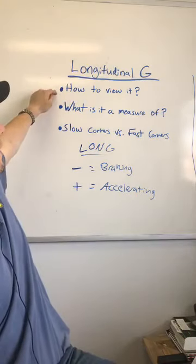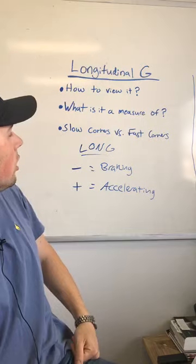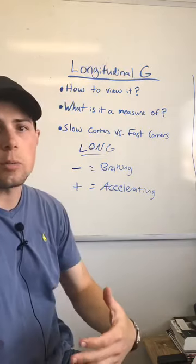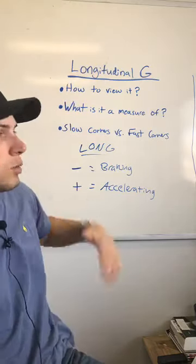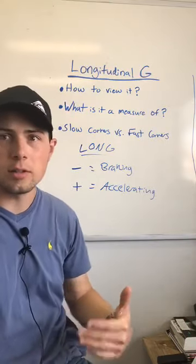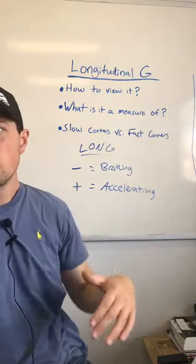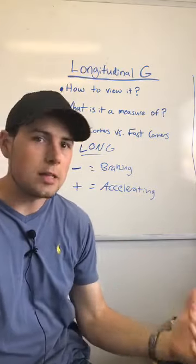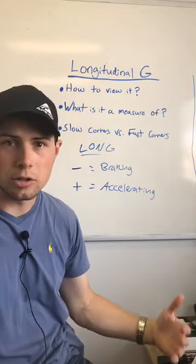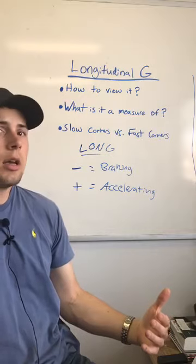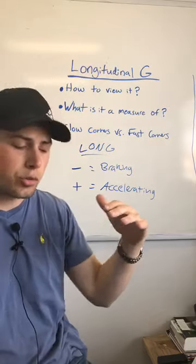So how to view it — just look for long G in the app. What is it a measure of? G force is a measurement of the weight we feel experienced by the force of gravity. One G is one times the force of gravity, basically equivalent to the force pressing us down onto the earth. What's important to know about racing is most out-of-the-box street tires are not capable of more than one longitudinal G — more than negative one or positive one G. Positive one G is a massive amount of acceleration.